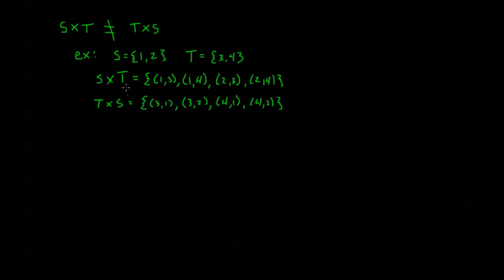Looking at S cross T and T cross S, they do have a correspondence in that I have the same number of ordered pairs, and I'm just flipping the roles of each of the ordered pairs. I have (1,3) here, so I have (3,1); I have (1,4), I have (4,1); (2,3), (3,2); (2,4), (4,2). However, because they are ordered pairs, the order is very important. Even though both sets have pairs composed of the same values, the order is different, so these elements are not equal to each other and these sets are not going to be equal. So we do not have a commutative rule for the cross product — we can't switch the roles of S and T.